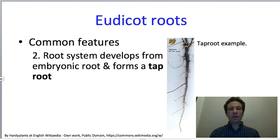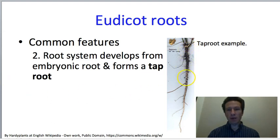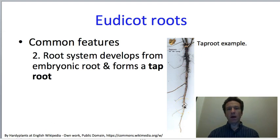Another difference is that eudicot roots tend to form from the embryonic root. In monocots, the embryonic root dies and adventitious roots form a fibrous root system. In eudicots, the embryonic root continues to grow, eventually thickening over time with lateral growth, forming a tap root. So most eudicots form a tap root.